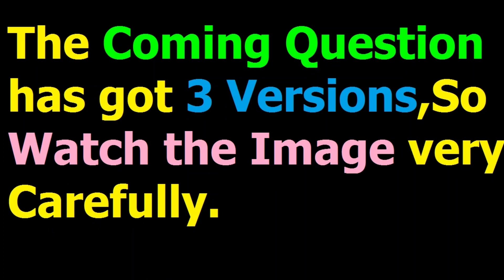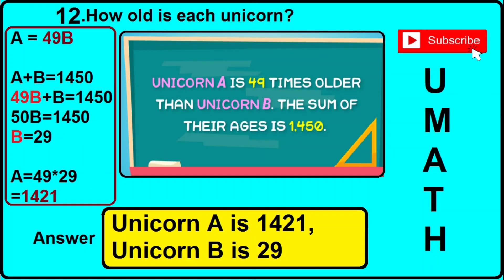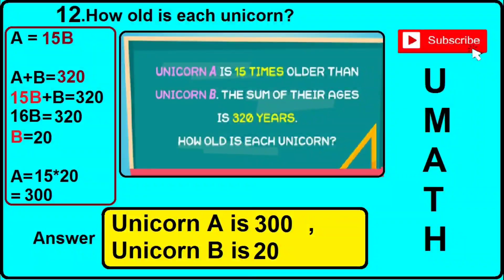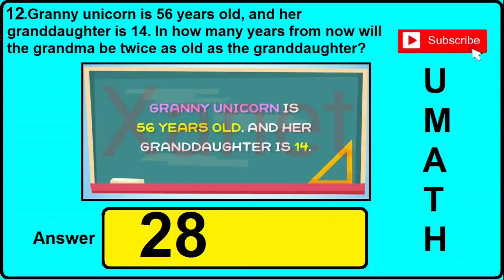Question number 12 has got 3 different versions — watch the image carefully. In version 1, just watch the image and click the answer shown. In version 2, if you find the same image, the correct answer is: Unicorn A is 300 and Unicorn B is 20. In version 3: Granny Unicorn is 56 years old and her granddaughter is 14 — in how many years will grandma be twice as old as the granddaughter? The correct answer is 28.